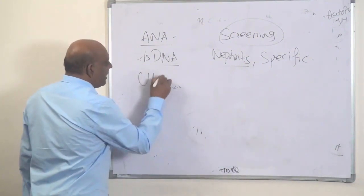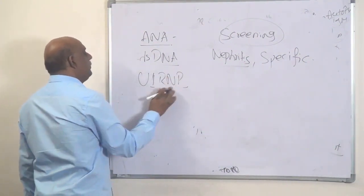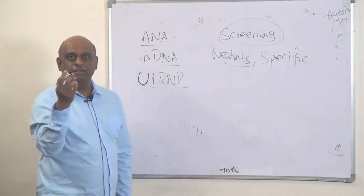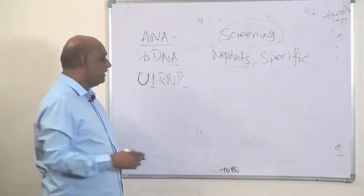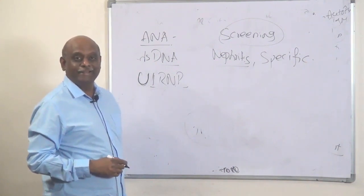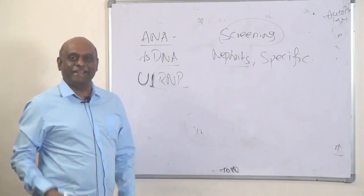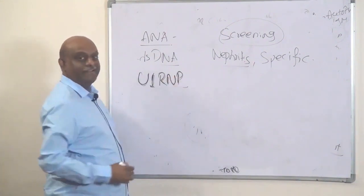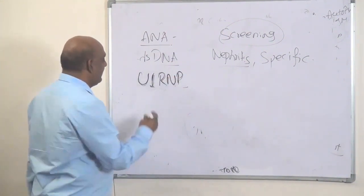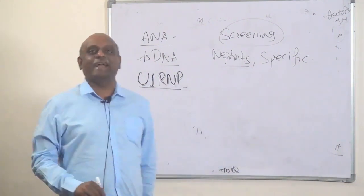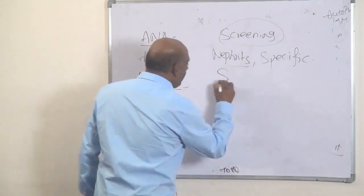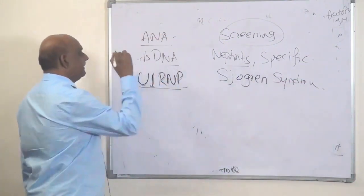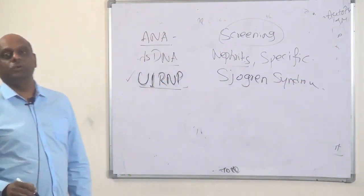Then, U1-RNP — what is the importance of U1-RNP? U1-RNP is what you typically see in Sjogren's syndrome.